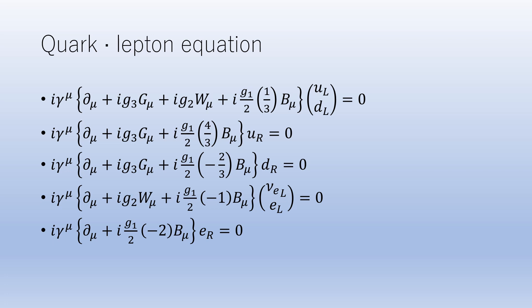Gluon G interacts only with quarks and does not distinguish between left-handed L and right-handed R. The gauge field W of SU(2) binds only to doublet left-handed quarks and left-handed leptons, and does not interact with singlet right-handed quarks and right-handed leptons.